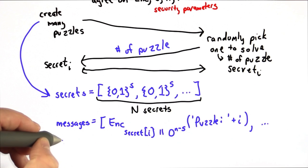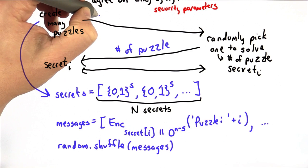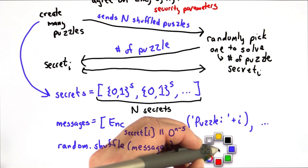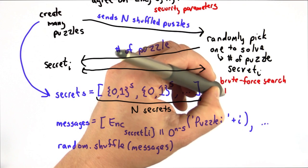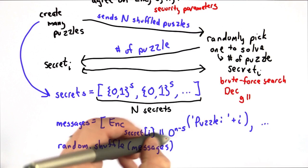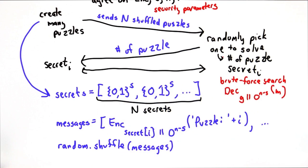After this, Alice shuffles the messages and then sends all N messages to Bob. Bob randomly picks one of those, then does a brute force key search, where Bob is trying to decrypt using a guess key concatenated with n minus s zeros, the message that Bob randomly selected from those puzzles.